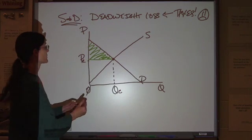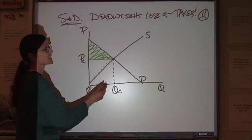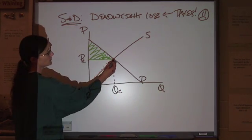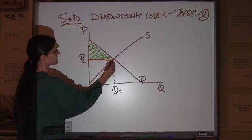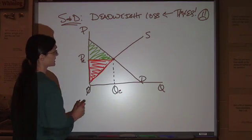Similarly, for the producers, if everybody got for the product exactly what they were willing to accept, then they wouldn't all be getting the market price up here. But since they're getting more than they were willing to take, that's your producer surplus down here.